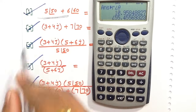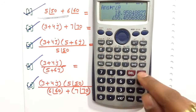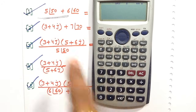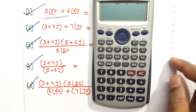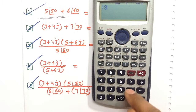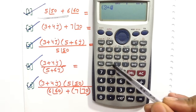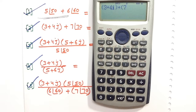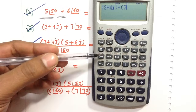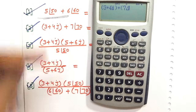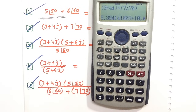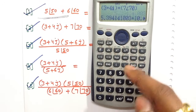Proceeding to question number two: 3 plus 4j plus 7 angle 70. Write the whole equation on the calculator. Press bracket, then 3 plus 4j — to write j, press the dedicated j button. Then plus, bracket, 7, angle — press Shift then the angle button — and write 70. Press equals to get the answer in rectangular form by default, then press SD for the complete solution.